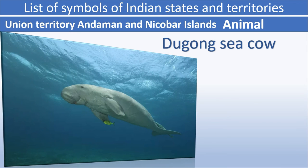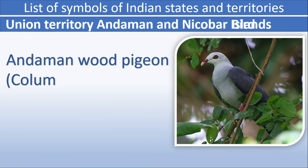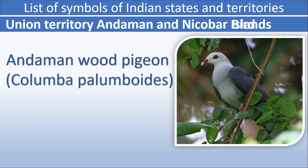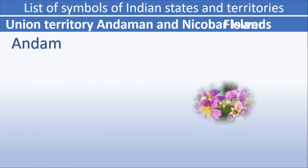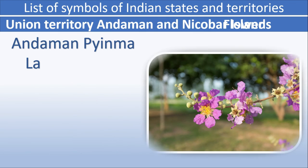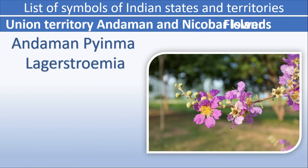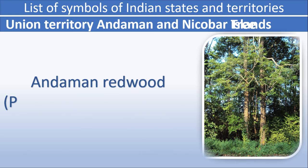Union Territory — Andaman and Nicobar Islands: animal: Dugong (Sea Cow). Andaman bird: Andaman Wood Pigeon. Andaman flower: Andaman Padauk (Lagerstroemia). Andaman tree: Andaman Redwood.